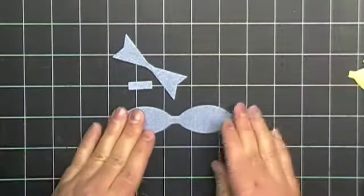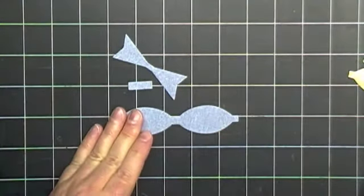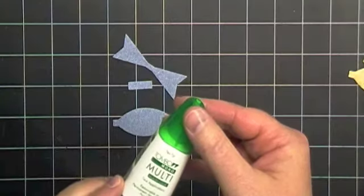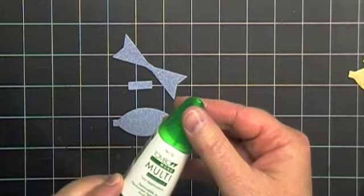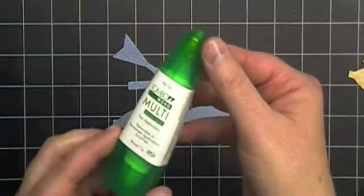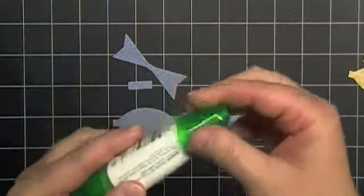So a couple different things you can use. You can use glue dots or you can use a little bit of glue. I usually grab this Tombow Mono Multi Glue which is kind of my go-to glue.